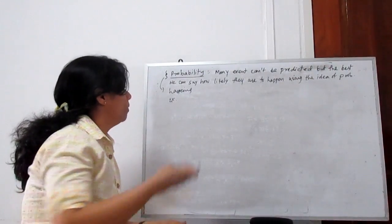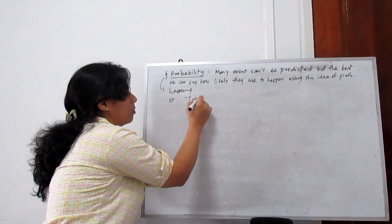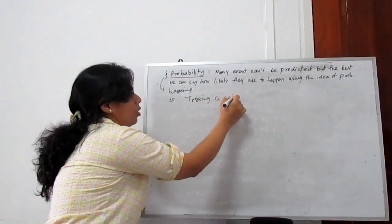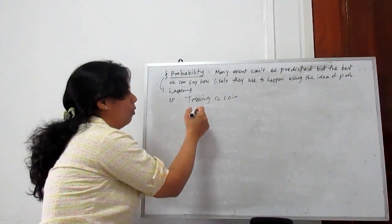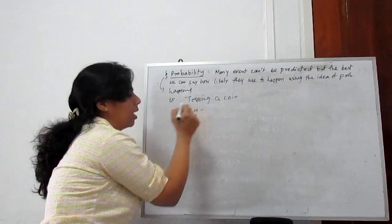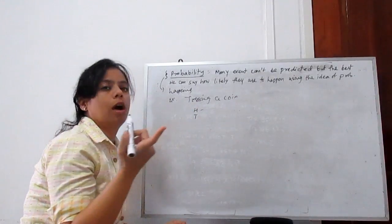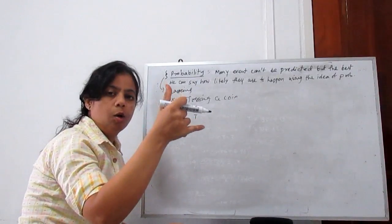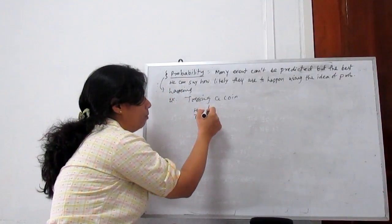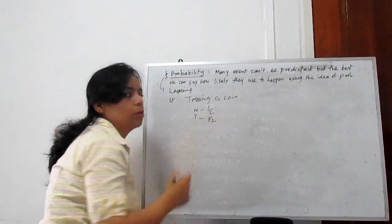For example, if we have a coin — so tossing a coin. A coin only has two faces: one is head, another is tail. So what is the probability to come if we are tossing a coin? The probability to get head is 1 by 2, and for tail also 1 by 2.